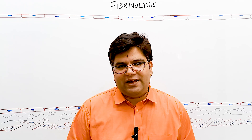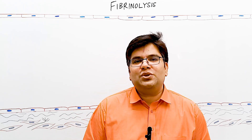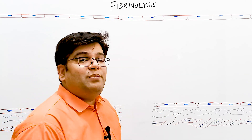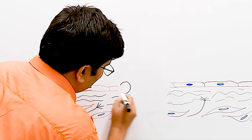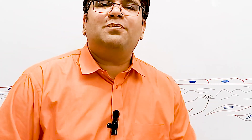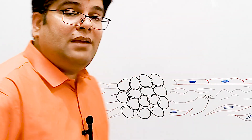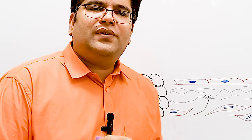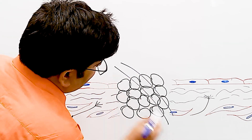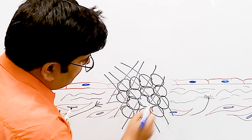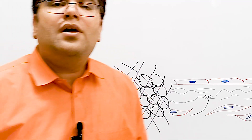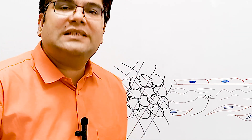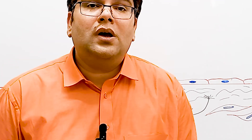In our previous sessions we studied that whenever there is injury to the vessel wall, the first step is vasoconstriction, followed by platelet plug formation. This formation of platelet plug is also called primary hemostasis. It's a temporary weak plug required to stop bleeding, which is further strengthened by fibrin meshwork or fibrin clot made from fibrinogen protein. The process of blood coagulation is also called secondary hemostasis.